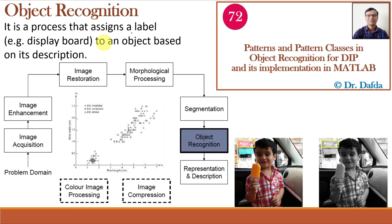The next step is object recognition, which is a very advanced step. It is the process of assigning a label — for example, 'display board' — to an object based on its description. It is a difficult task involving machine learning and artificial intelligence. Object recognition in DIP is the process of identifying and classifying specific objects or patterns within an image by training a model on distinctive features such as shape, color, or texture. Common techniques include template matching, feature-based approaches like SIFT (Scale Invariant Feature Transform), CNN (Convolutional Neural Networks), and deep learning methods.